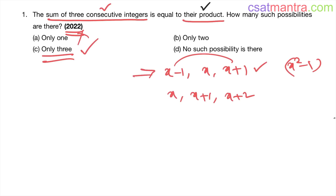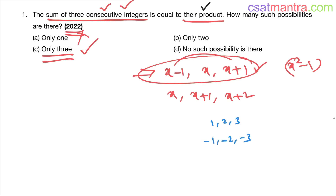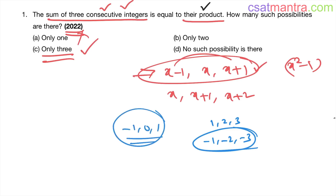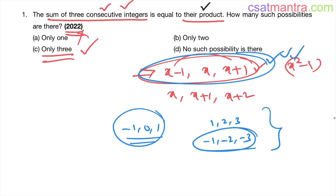This is a thumb rule: whenever you have 3 consecutive integers, represent them as x-1, x, x+1 — it makes things easier. You can also solve by trying simple numbers: 1, 2, 3 is one possibility; -1, -2, -3 is another; and -1, 0, 1 is a third. However, with trial and error you can't be sure you haven't missed any cases, whereas the algebraic method guarantees you find all solutions.